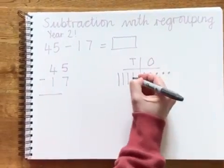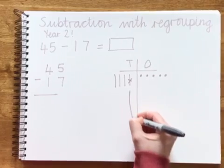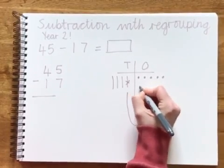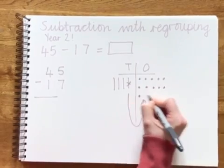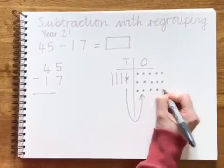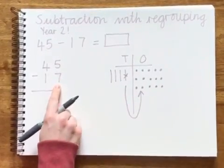No, so I'm going to cross out a 10, put it into the 1s column and regroup it. 1, 2, 3, 4, 5, 6, 7, 8, 9, 10. Can I take away 7 now?